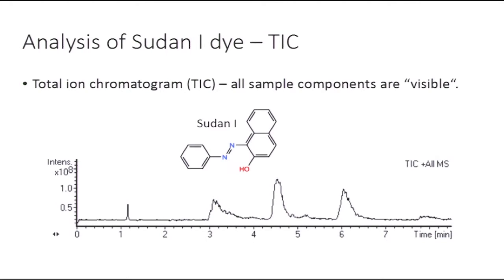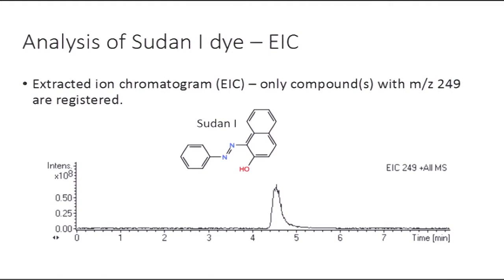If we take advantage of the added selectivity of the mass spectrometer and use the extracted ion chromatogram of the mass-to-charge ratio 249, then only the peak belonging to Sudan 1 dye is visible. So we have achieved very high selectivity using the mass detector properties.